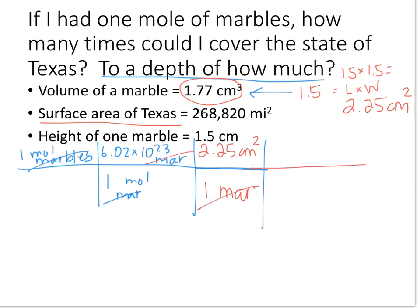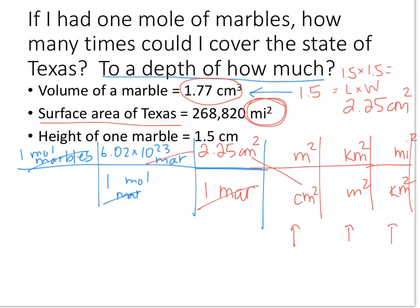Of course there's going to be some space between marble one and marble two because it's a curved object. We're going to neglect that space. So I know that one marble has a surface area of 2.25 centimeters squared. So my marbles are gone. I come down here and say I'm trying to go from centimeters squared to miles squared for Texas. I don't know how to do that. But what I do know is how to get from centimeters to meters and from meters to kilometers and from kilometers to miles. We're worried about the squared part in just a second. I'm going to put little squares on everybody.